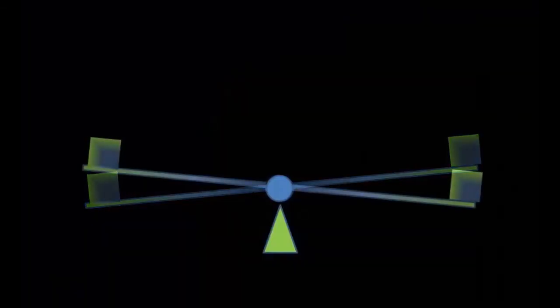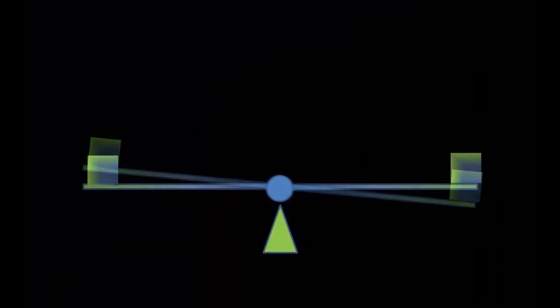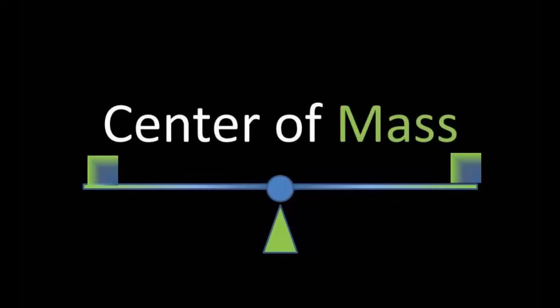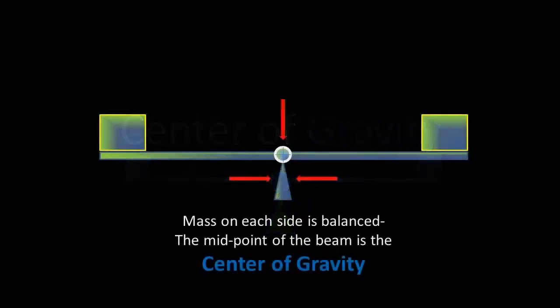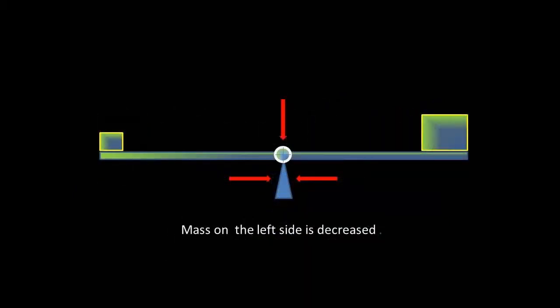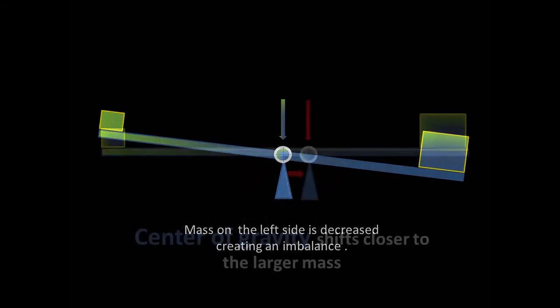When dealing with gravitational forces, it's easier to model these forces acting on a single point of an object. This point is referred to as the center of mass, or the center of gravity. The center of mass is essentially the average point in between all the mass of a body.